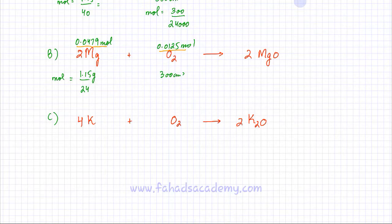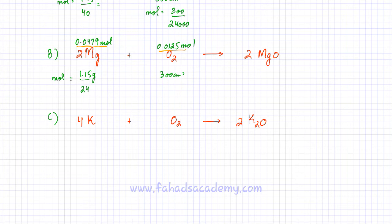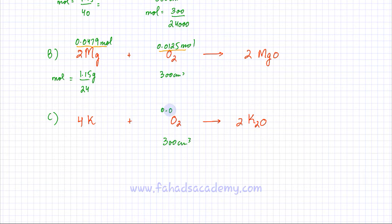Next we try option C, potassium reacting with oxygen to produce K₂O, since potassium has a charge of +1. Balancing the equation gives 4K + O₂ → 2K₂O, so the ratio of potassium to oxygen is 4:1. The moles of oxygen from 300 cm³ remain 0.0125 moles.